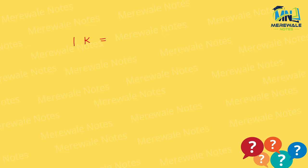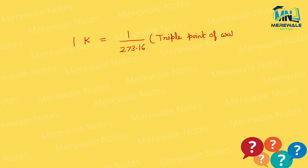1 Kelvin is defined as 1/273.16 multiplied by the triple point of water. You should know that the triple point of water is 273.16. So when you cancel out the numerator and denominator, 1 Kelvin equals 1 Kelvin.